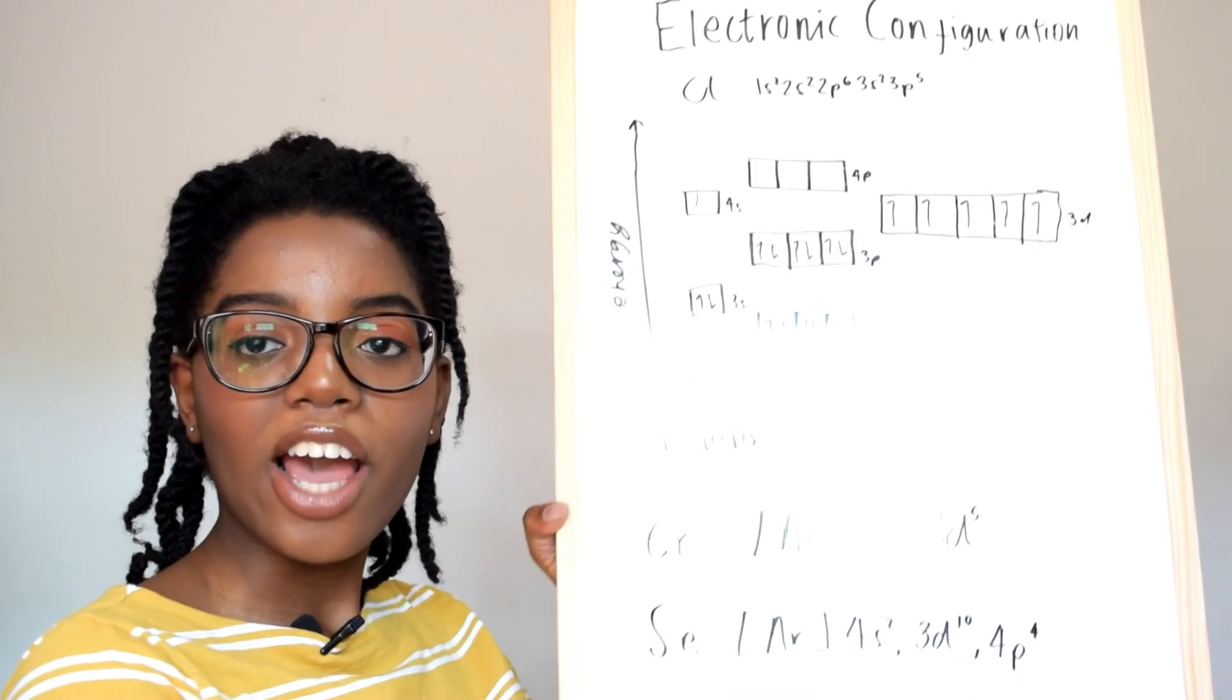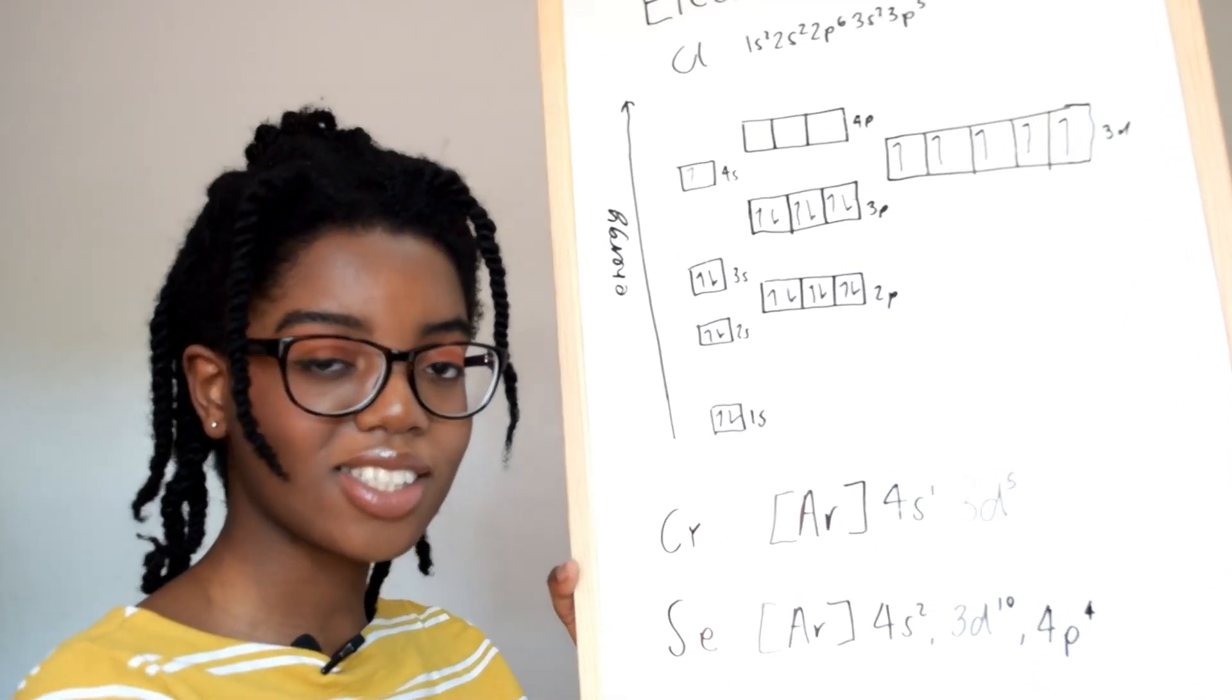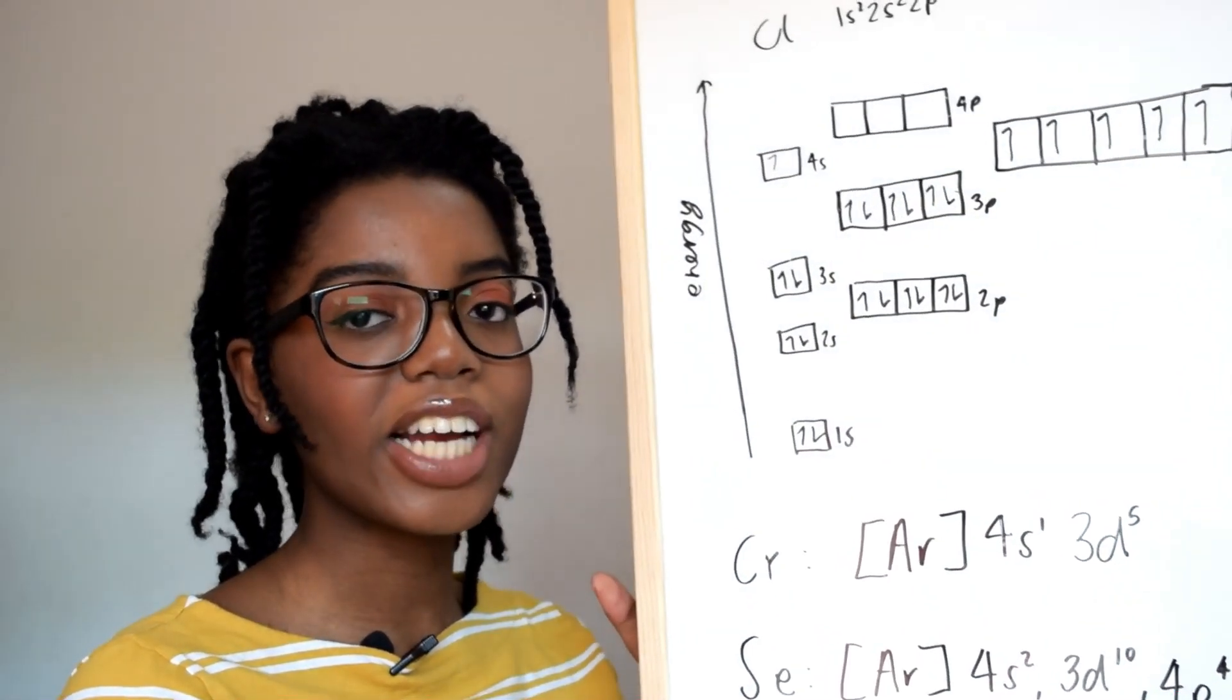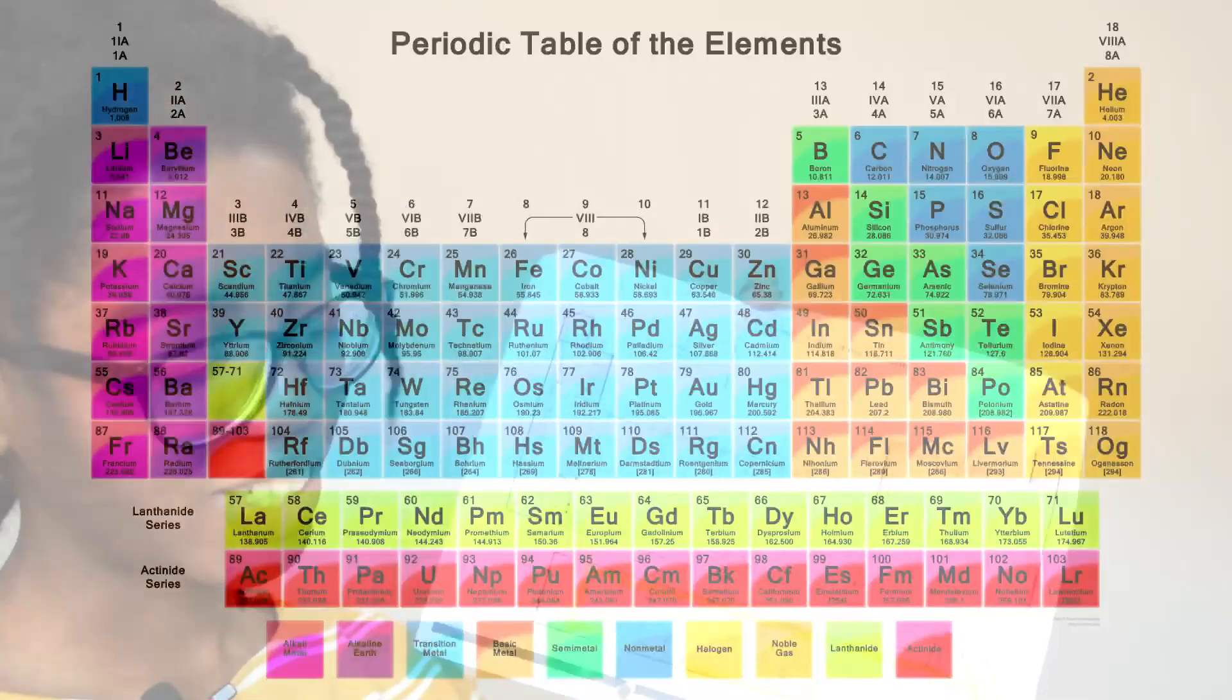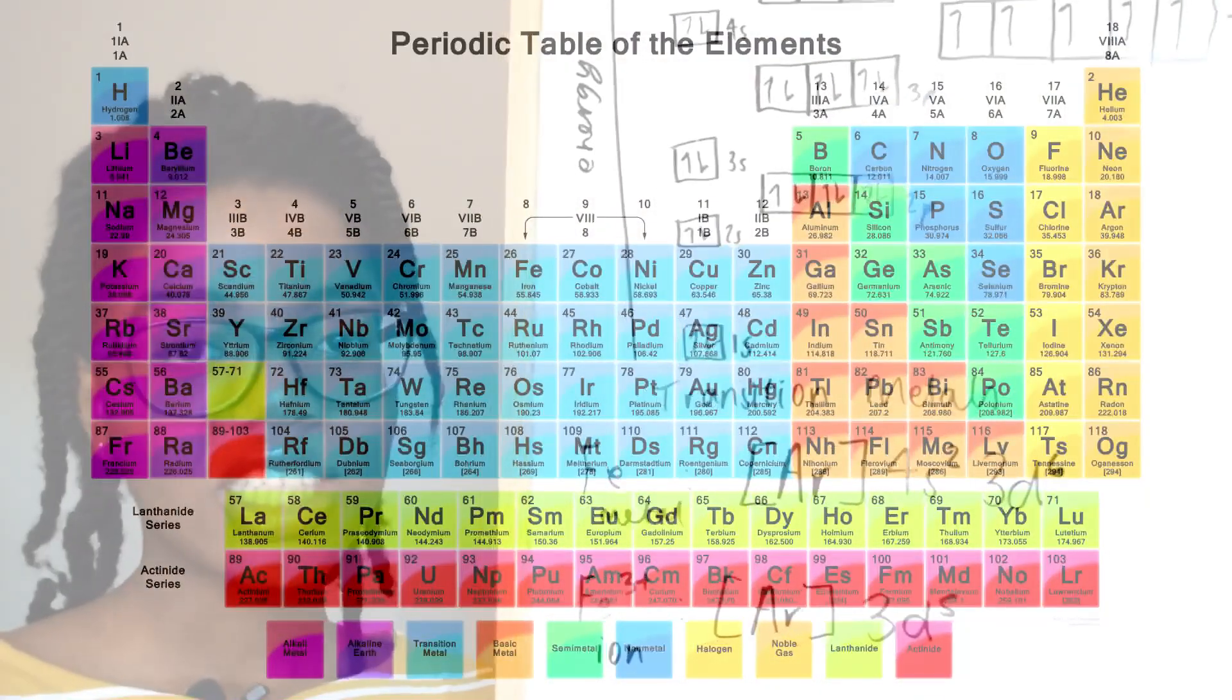This is just something you'll get really used to seeing in chemistry and there's lots more interesting things that can be done with electronic configuration. With the transition metals there's actually something even more interesting. With the ion when forming a transition element,